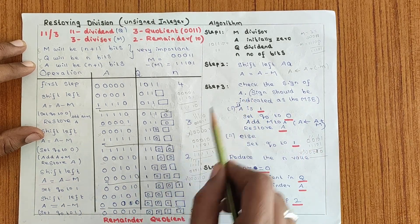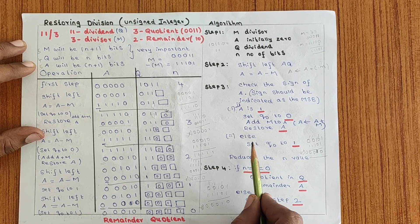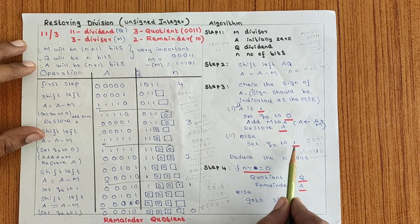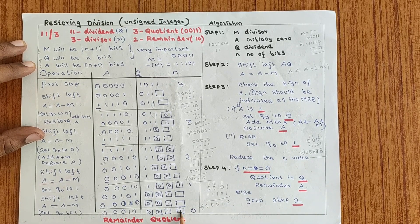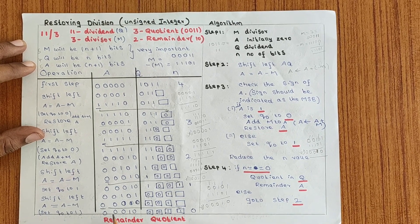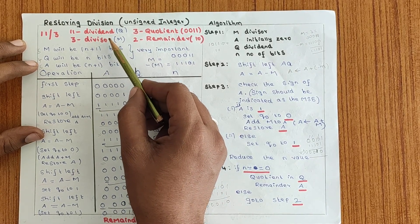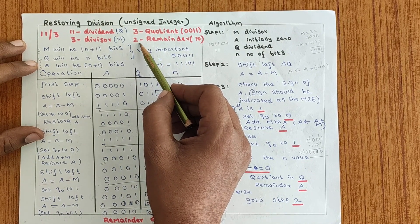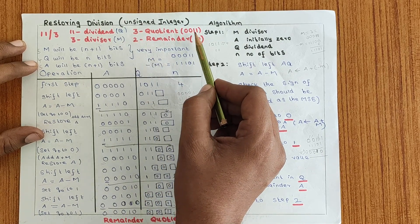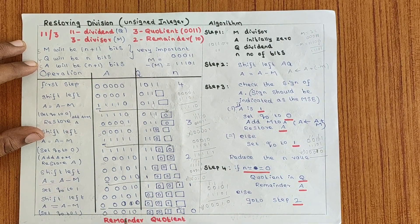N == 0, so the quotient is stored in Q and remainder is stored in A. Quotient Q = 0011 and remainder A = 00010. If we perform normal division 11 ÷ 3, the quotient is 3 and remainder is 2. In binary, 3 is represented as 11 and remainder 2 as 10. Both answers are correct.